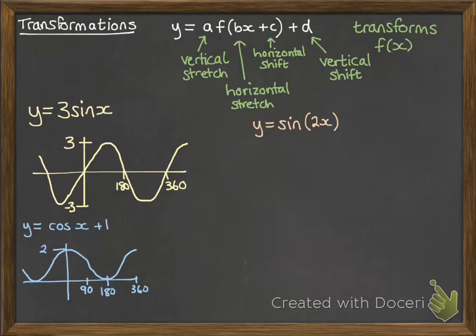Okay, y equals sine of 2x. So inside the function means it's a horizontal stretch. Multiplying by 2 is going to be a horizontal stretch by a factor of a half. So it looks like this. It's going up to 1 and down to minus 1 again, but it's going to shorten in the horizontal direction. So it'll go through the x-axis at 90, 180, 270 and 360, whereas the original one just went through at 180 and 360.